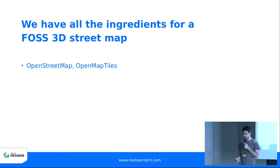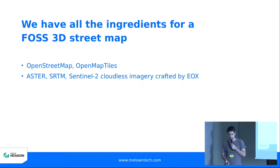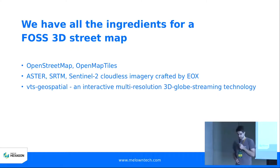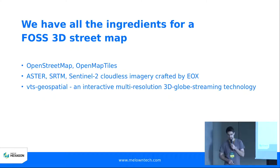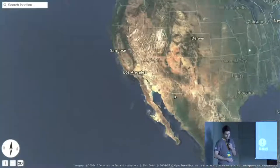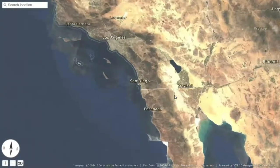Now we have all the ingredients we need for a fully FOSS 3D street map. We have OpenStreetMap as the data base, we have FOSS tools to tile or take care of this data — OpenMapTiles — we have global DEMs, we have a global satellite mosaic such as Sentinel-2 Cloudless imagery, and we have VTS Geospatial which is an interactive multi-resolution 3D globe streaming platform to take care of the visualization part.